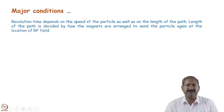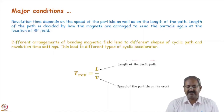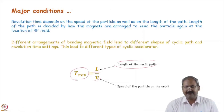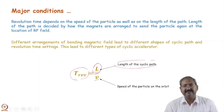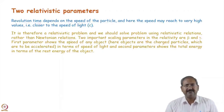Revolution time should be synchronized. The revolution time depends on the length of the orbit divided by the speed: T_revolution = L / V. The length of the orbit L is decided by how we are arranging the dipole magnets, and the speed V depends on the particle's energy.